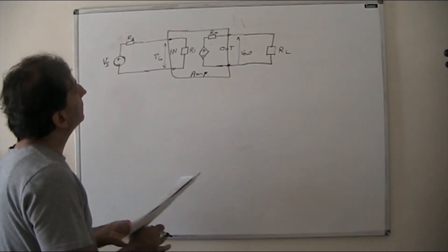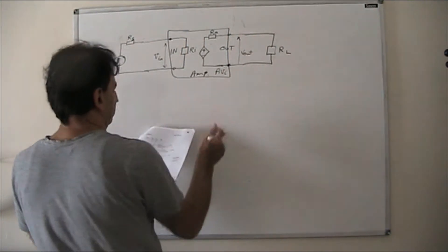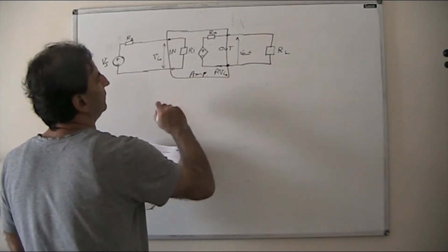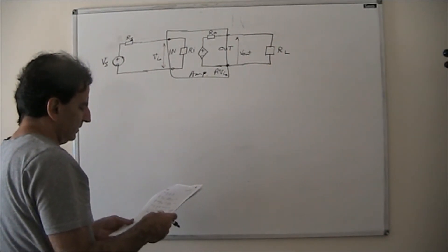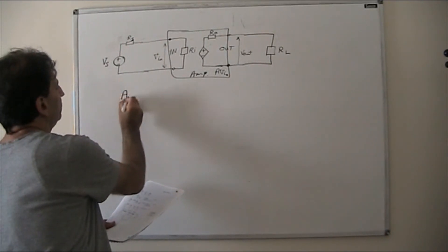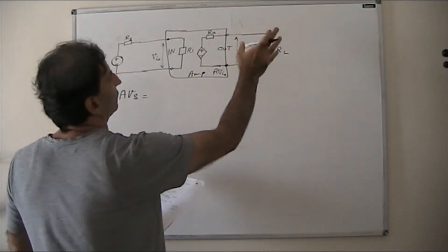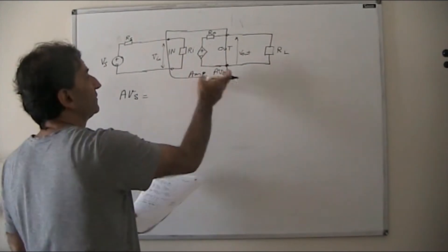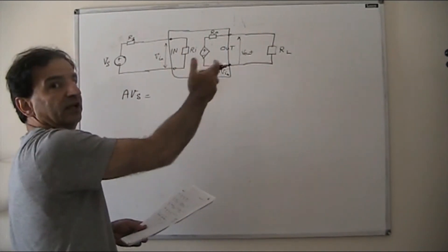The amplifier itself will have its own internal gain AVI — the internal gain of the amplifier. To find the overall gain AVS, the total gain as far as the load is concerned, we note that resistors throughout the system — the internal resistance of the source, the input resistance, the output resistance — all cause voltage drops.